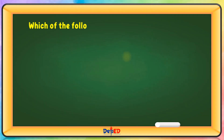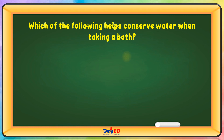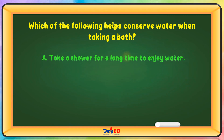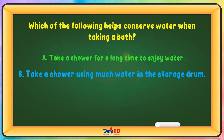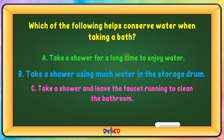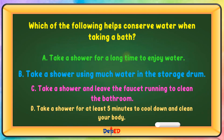Which of the following helps conserve water when taking a bath? A. Take a shower for a long time to enjoy water. B. Take a shower using much water in the storage drum. C. Take a shower and leave the faucet running to clean the bathroom. D. Take a shower for at least 5 minutes to cool down and clean your body. The answer is letter D.